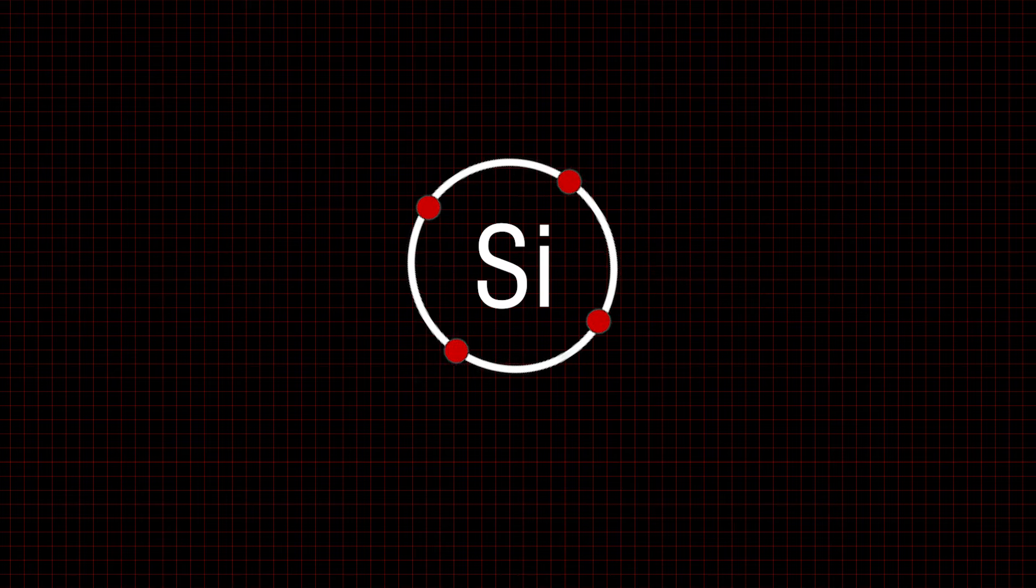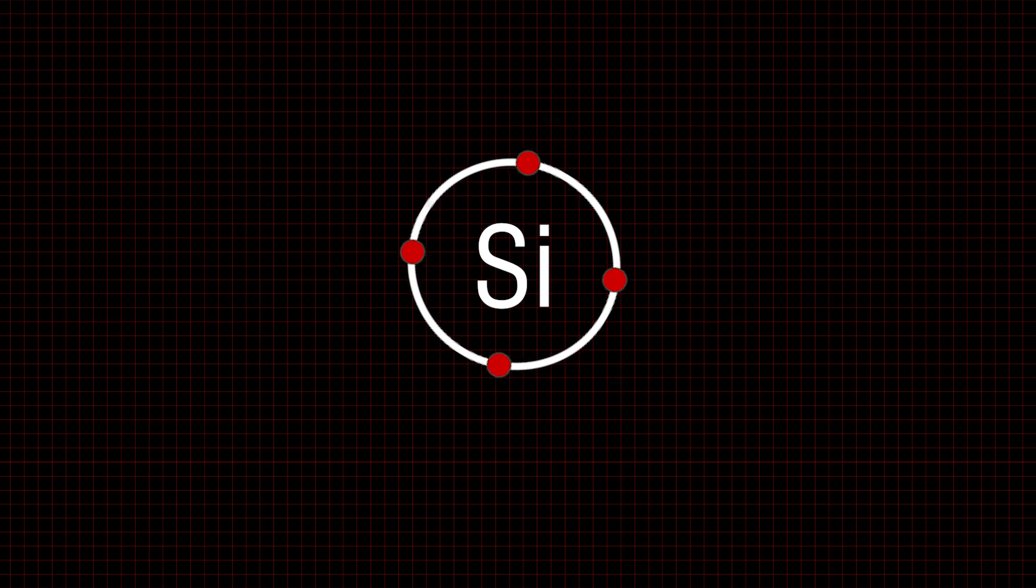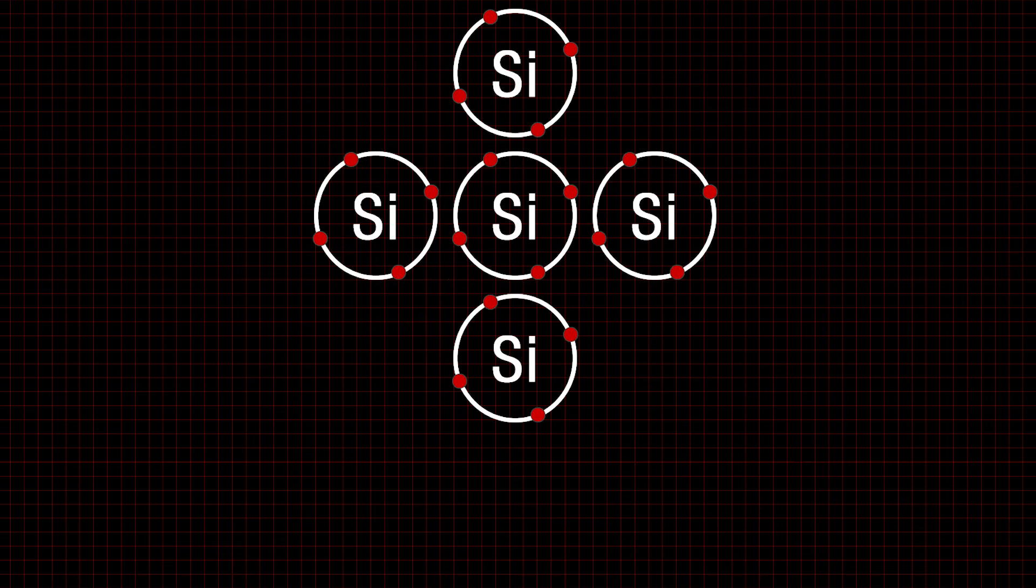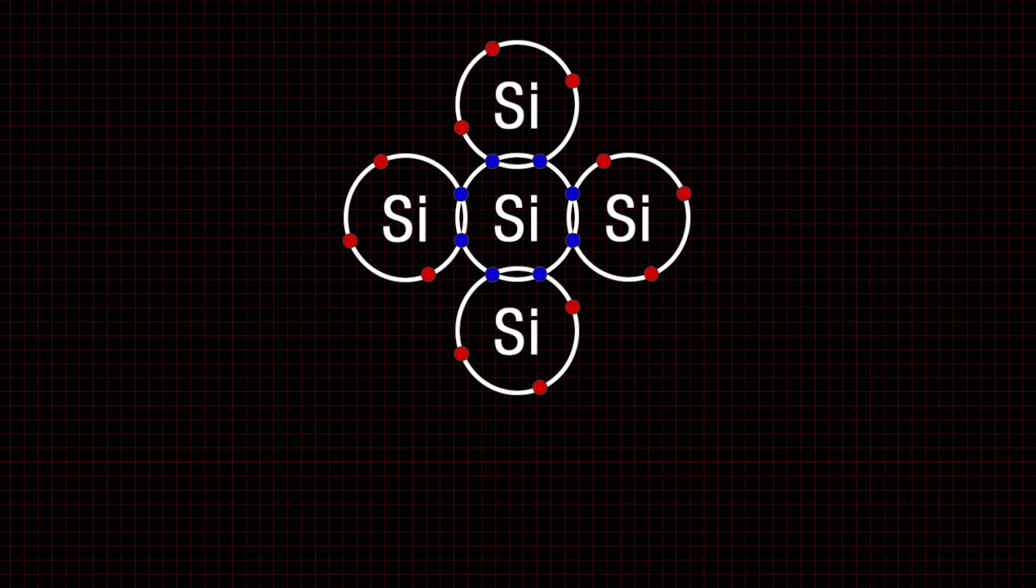Let's break this down to the atomic level. Silicon atoms each have four electrons in their valence shell, but they desire eight valence electrons. To achieve the desired amount, they share with the atoms around them. This is referred to as covalent bonding.